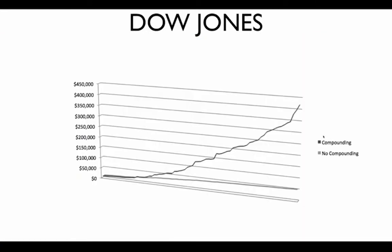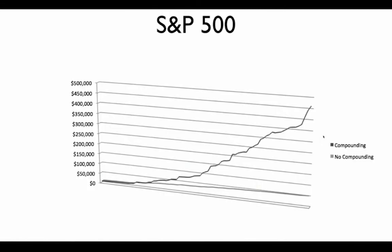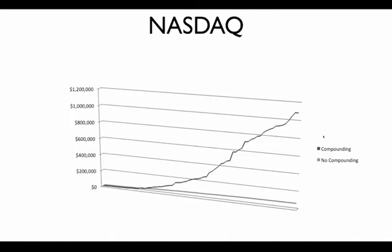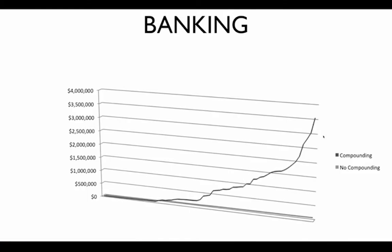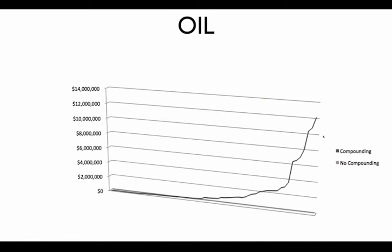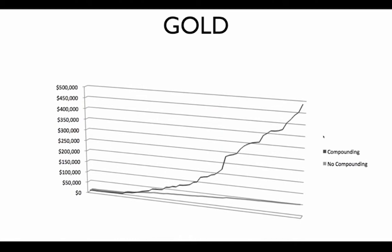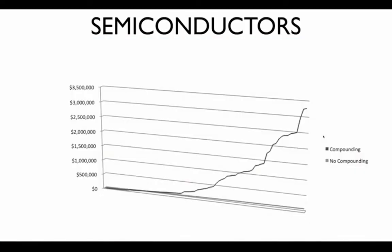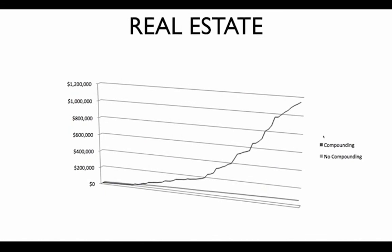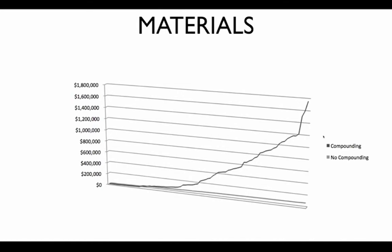Here's the equity chart on the Dow Jones going all the way back to 2006. With compounding, $10,000 turned into about $425,000. S&P 500: $10,000 to north of $450,000. NASDAQ: over a million. Banking: $10,000 to $3.5 million. Oil — our very best — $10,000 into $12 million. Gold: $10,000 to $450,000. Semiconductors: $3 million. You can see how smooth these equity curves are across all the different sectors.